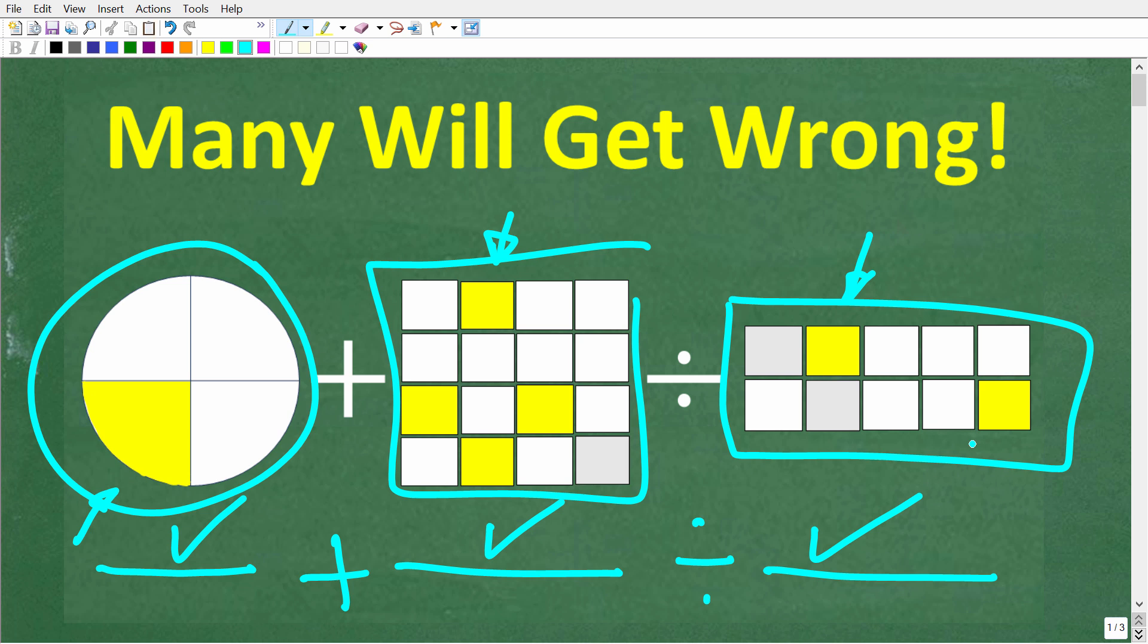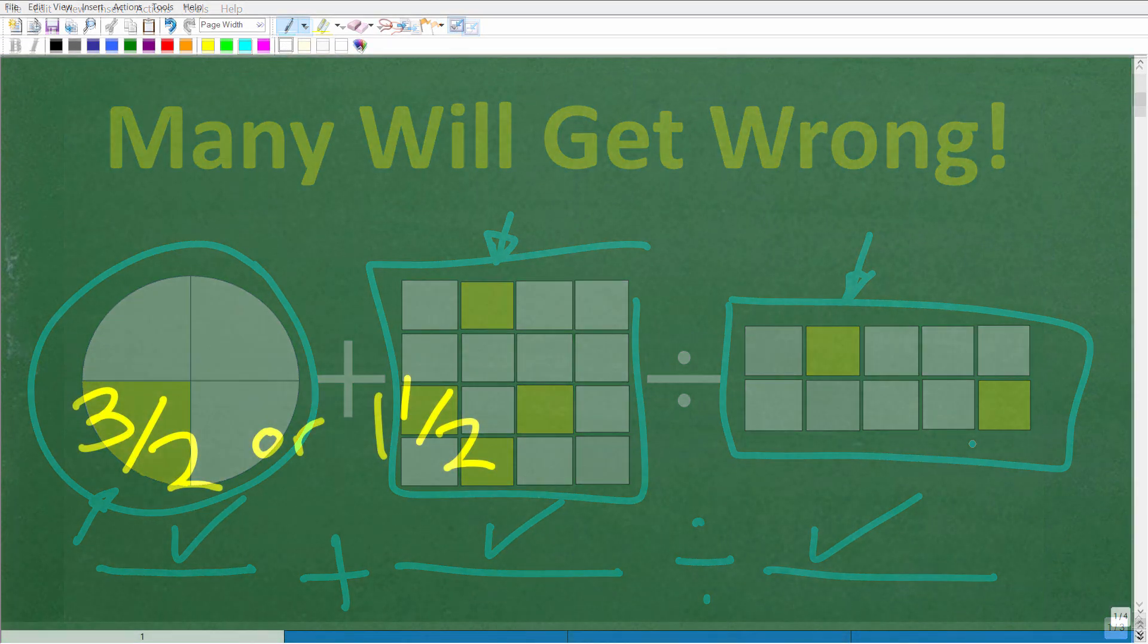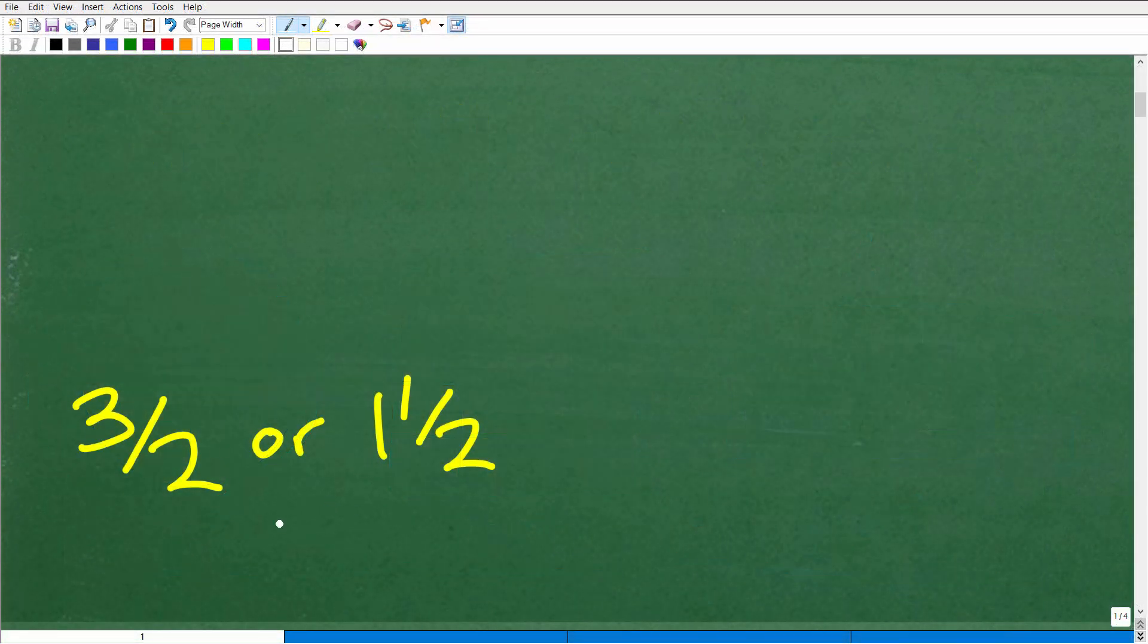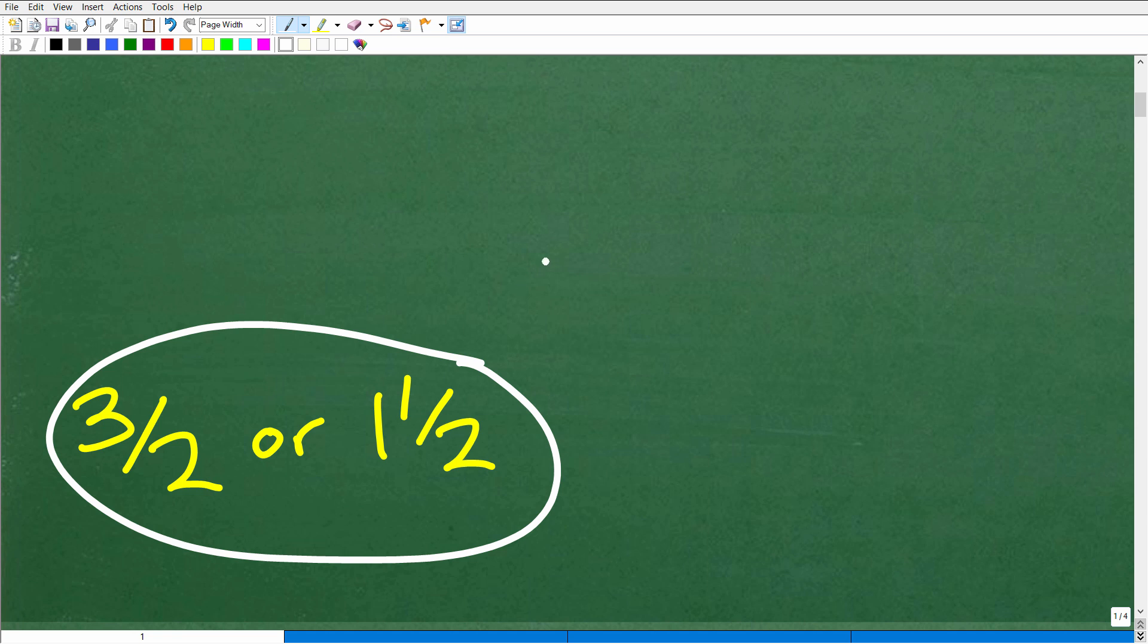All right, so let's go ahead and take a look at the answer right now. The answer is the following. Okay, three halves or you could write this as a mixed number fraction. So either one of these is correct.